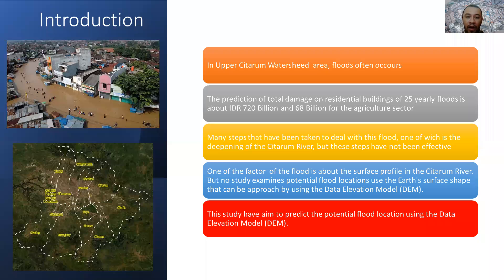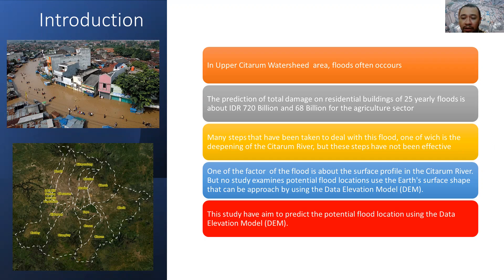In the upper Citarum Watus area, flood often occurs. The prediction of the total damage to resident buildings from a 25-year flood is about 720 billion. Many steps have been taken to deal with this flood — one of which is the deepening of the Citarum River — but that step has not been effective. One of the factors of the flood is the surface profile in the Citarum River.